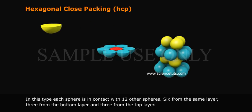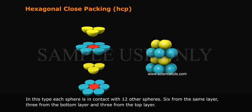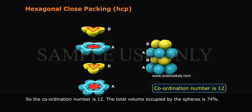In this type, each sphere is in contact with 12 other spheres: 6 from the same layer, 3 from the bottom layer, and 3 from the top layer. So the coordination number is 12. The total volume occupied by the spheres is 74%.